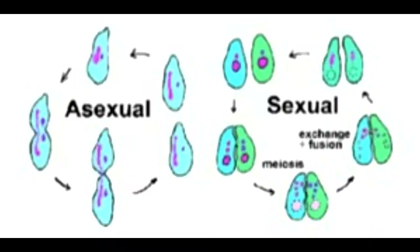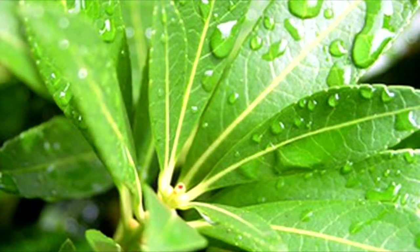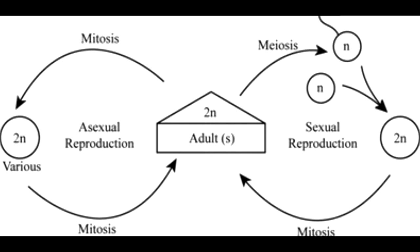Asexual reproduction only requires one parent, but this means the offspring are genetic clones of the parent. Asexual reproduction in plants can occur in many forms such as budding, vegetative propagation, and fragmentation. A disadvantage of asexual reproduction is that these plants are extremely vulnerable in a changing environment to pathogens or climate change, though there is the advantage that it can be done in shorter periods of time.